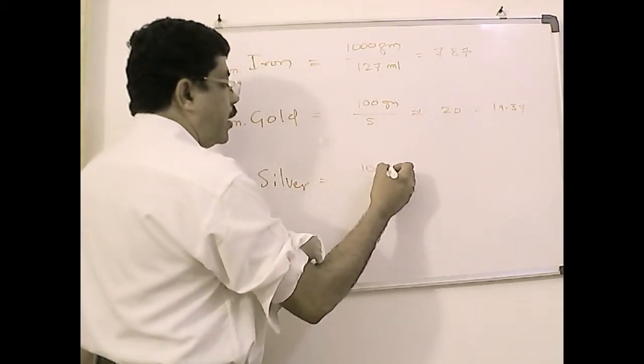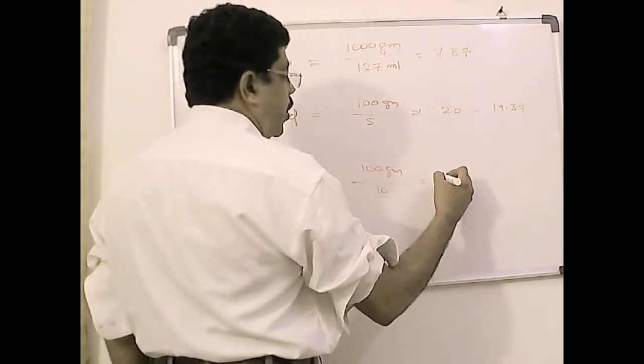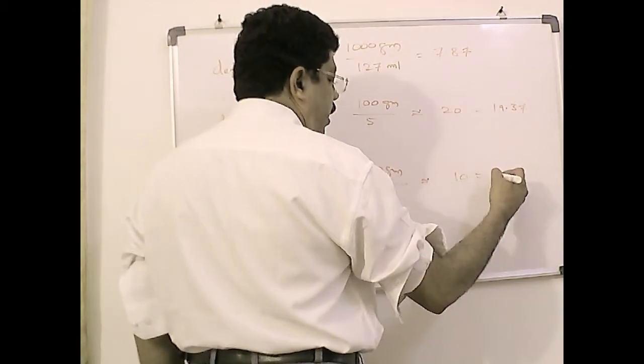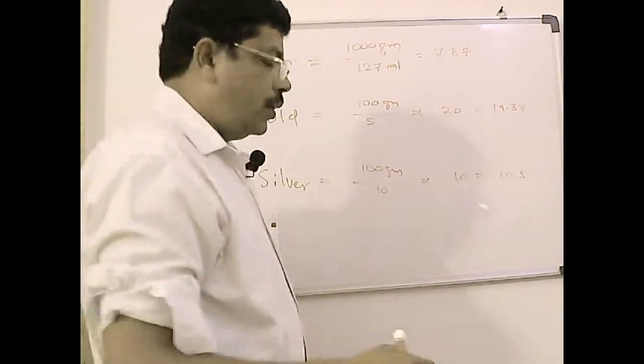And then in case of silver we have taken 100 grams and the water displaced was 10 ml. So it should come to around 10, the book value being around 10.5 to be very precise.